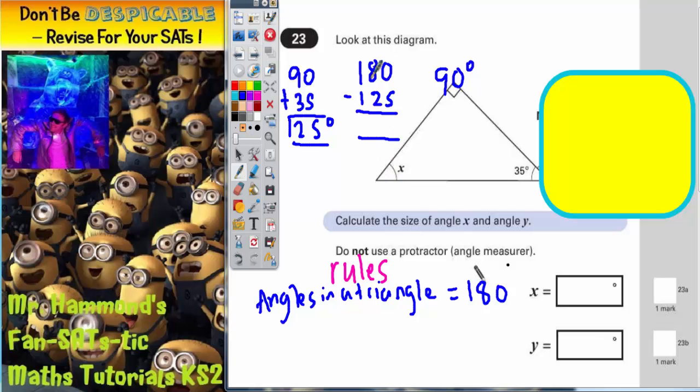So 180 take away 125, and whatever that is will be our missing angle x. So 0 take away 5 we can't do. Borrow 1. That becomes 10. 10 take away 5 is 5. 7 take away 2 is 5. And 1 take away 1 is nothing. So the final answer for angle x is 55 degrees. And that's angle x done.